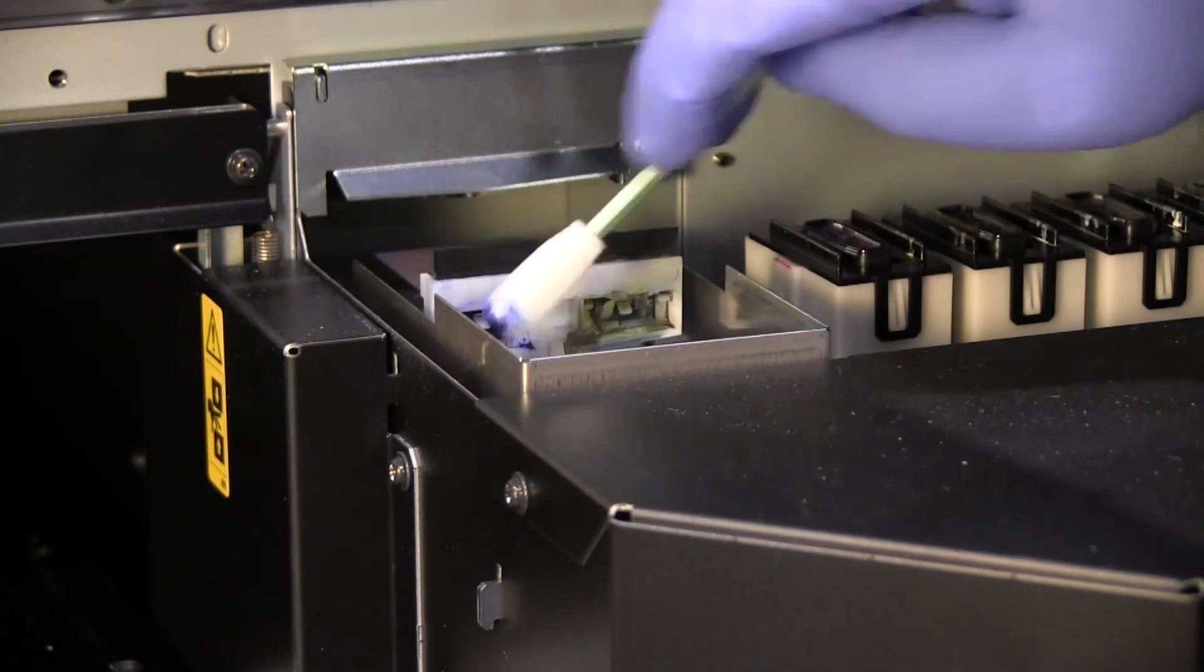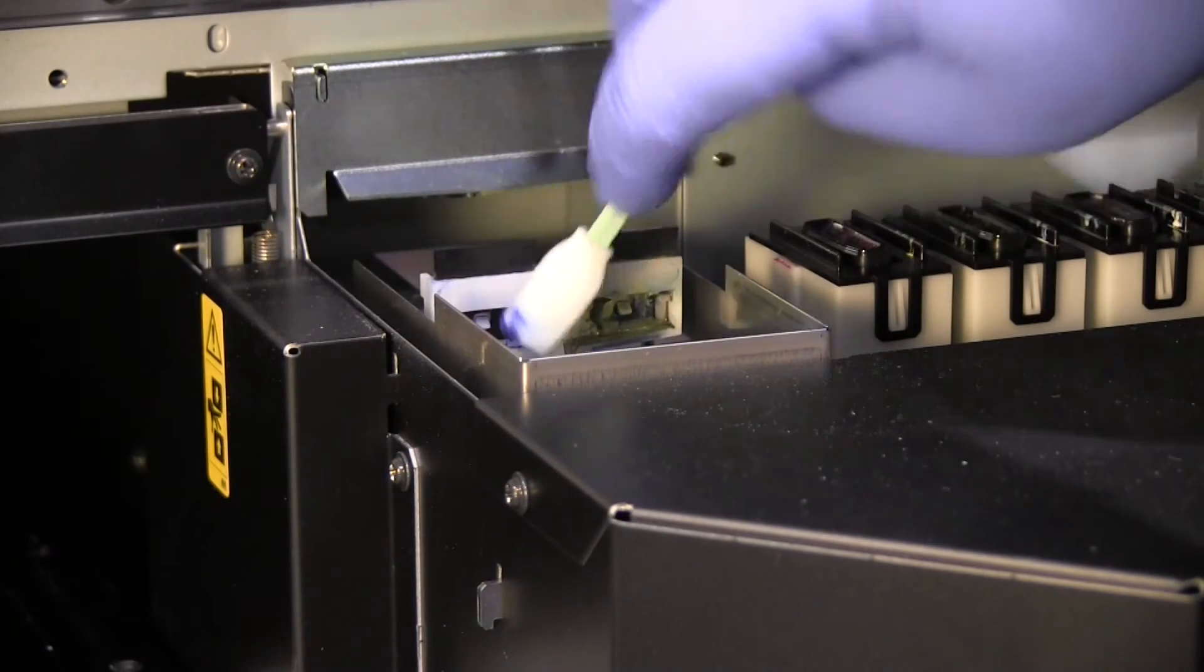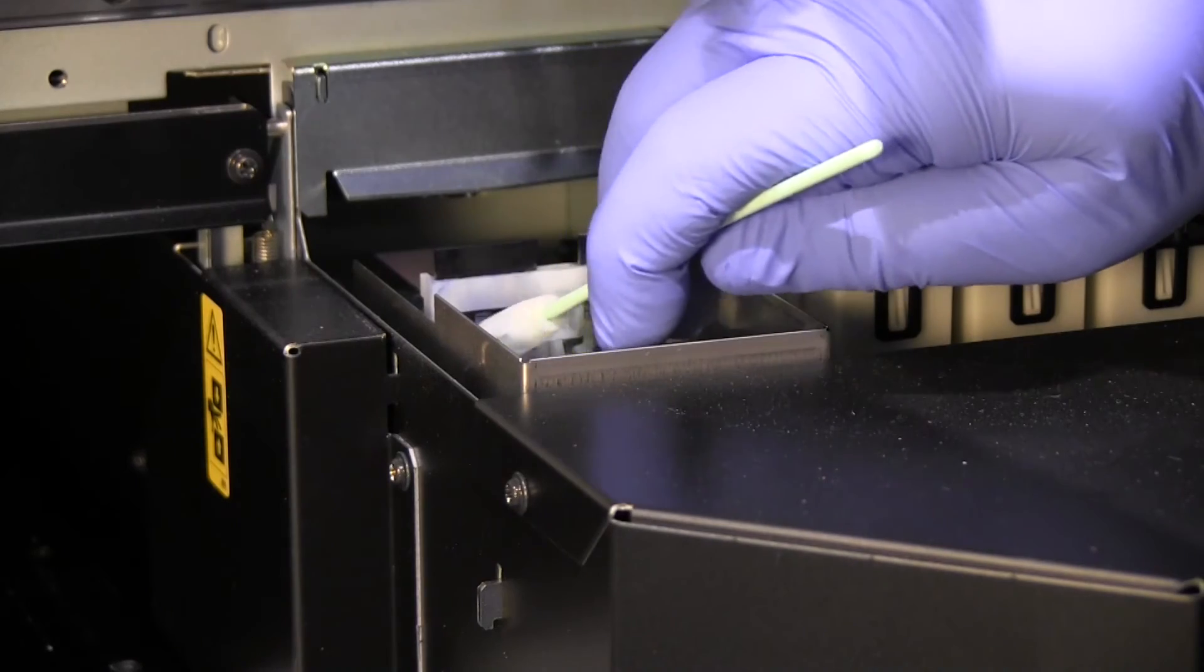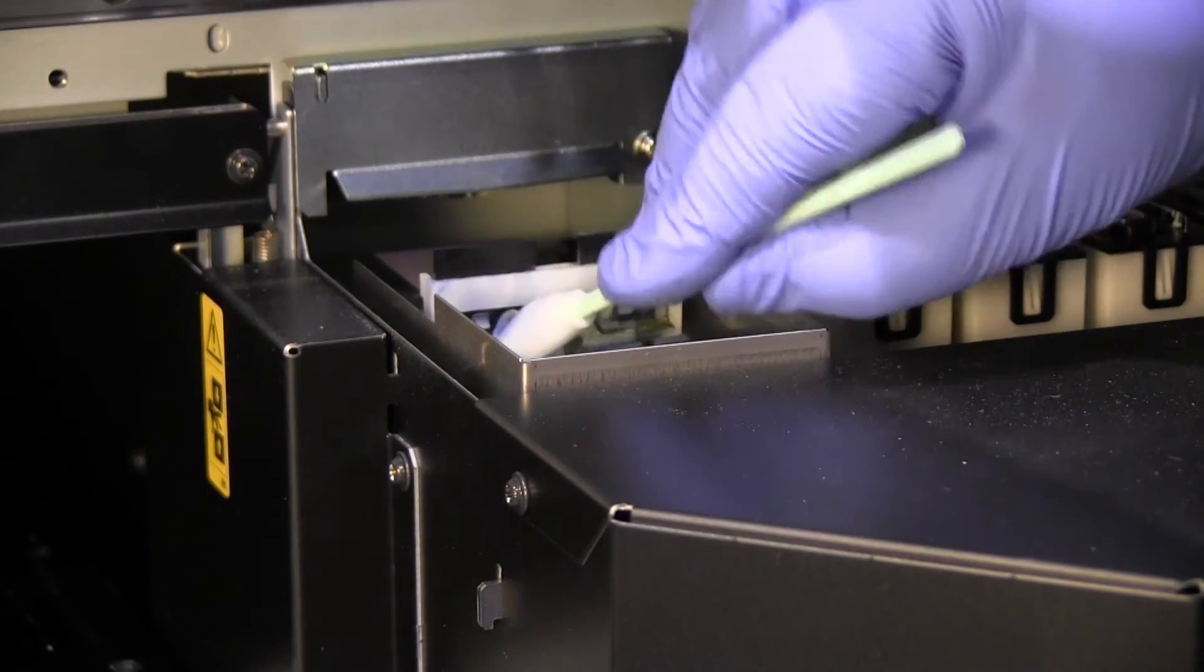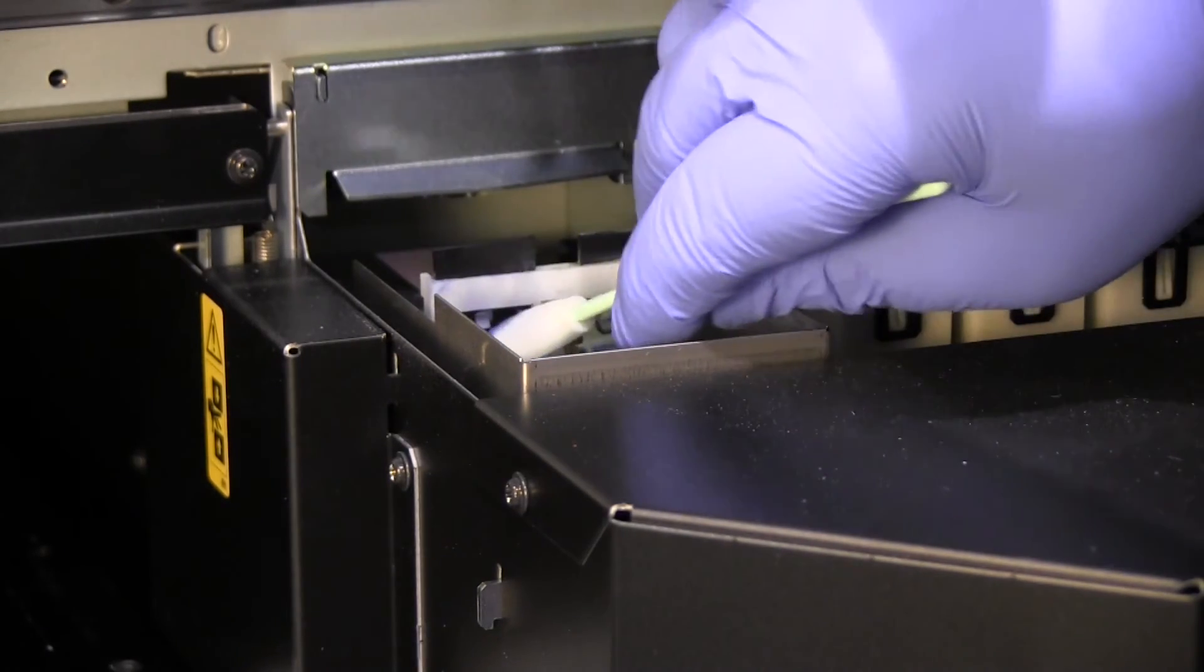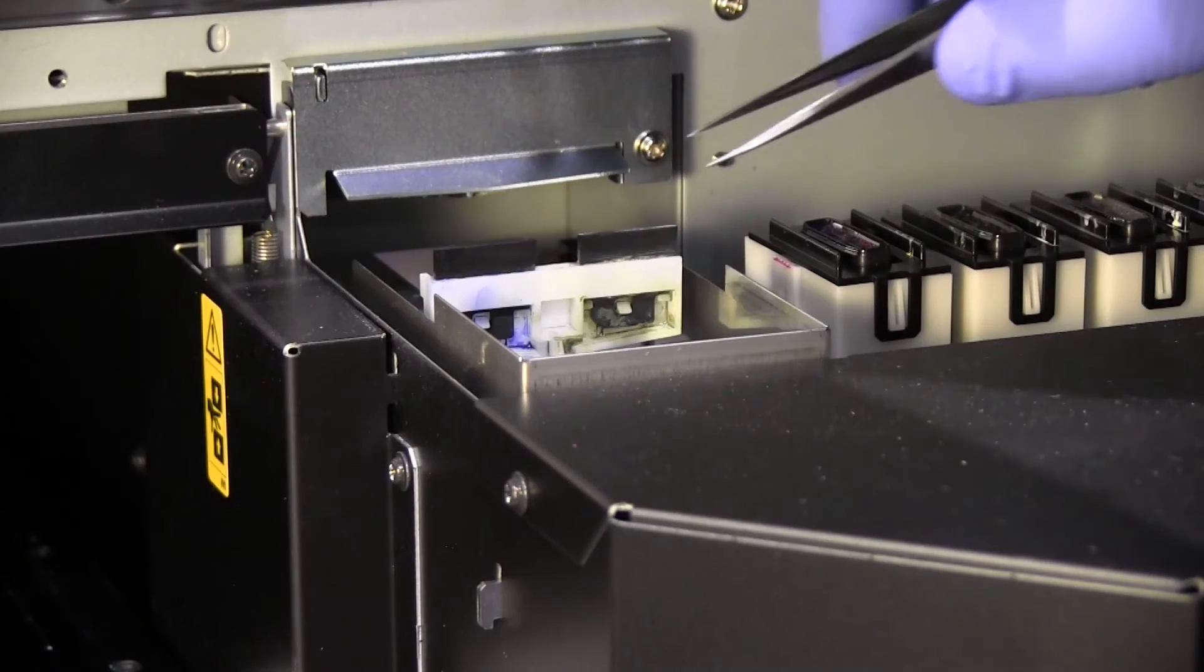Take the chance at this stage to check the condition of the wiper. If the wiper looks old and worn it may need replacing. Again you can use your torch to check the area for any hairs or fluff.